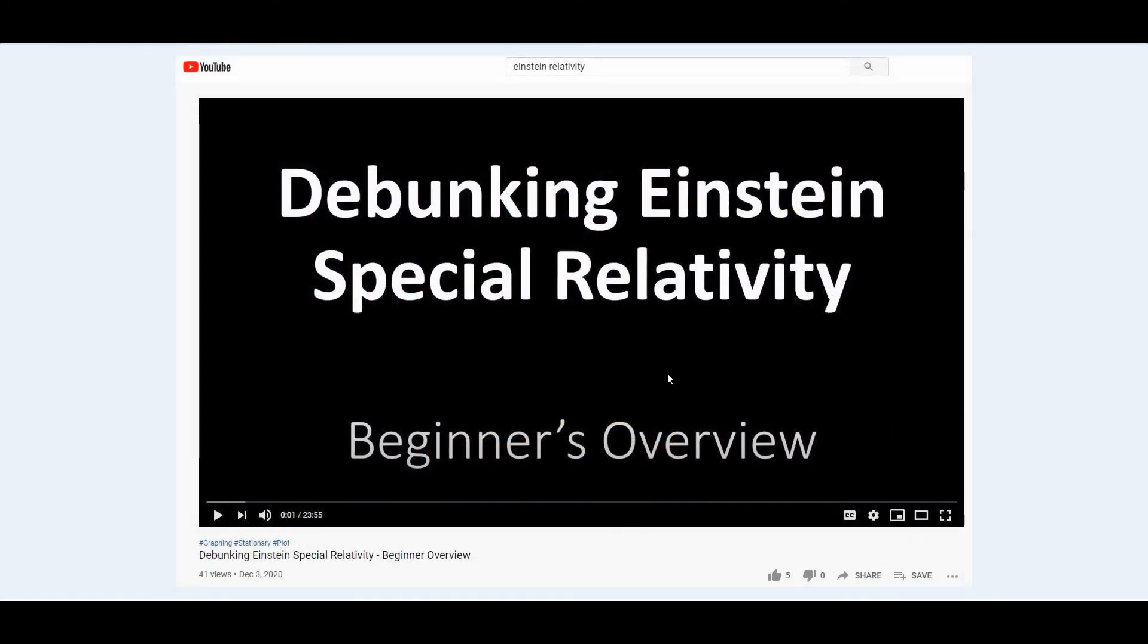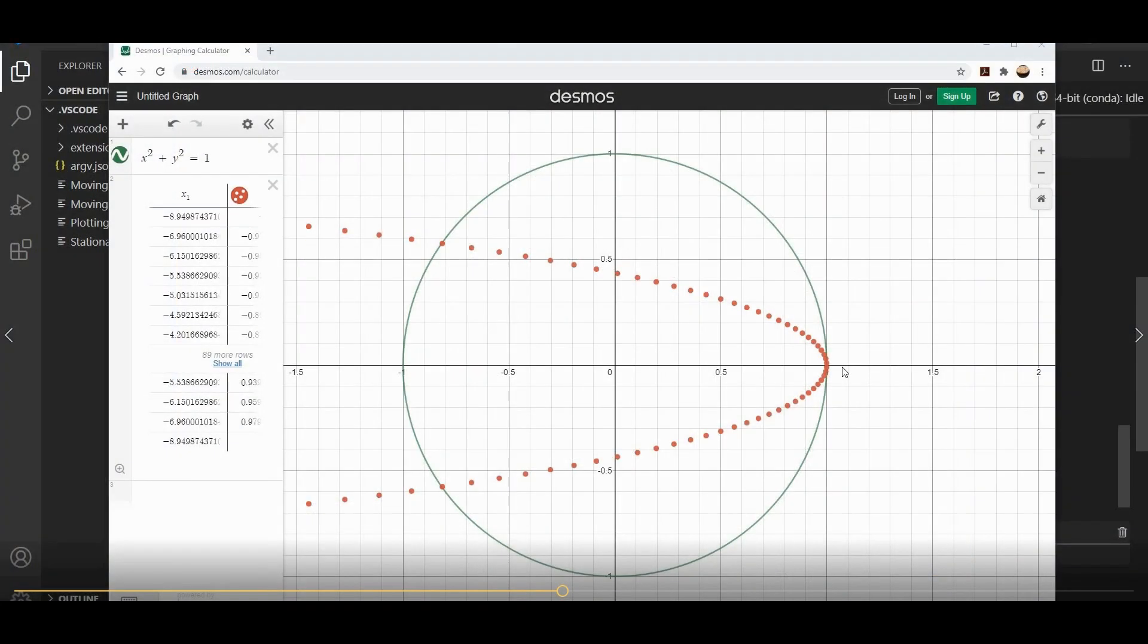Okay, that'll do it for this video. And for more information, you can check out my other video that will actually go into the spherical wave proof. The failure of that proof is exactly what disproves Einstein's special theory of relativity.